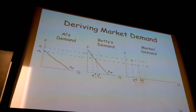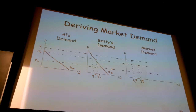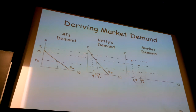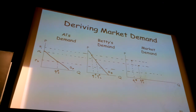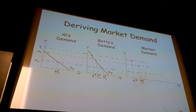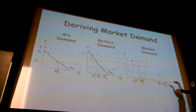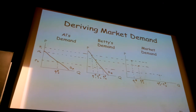But now let's suppose the price is a little bit lower still. Now we've got Al who's doing some purchasing at the third price, and we've got Betty demanding some of this product as well. The market demand is now just the quantity that Al demands plus the quantity that Betty demands.